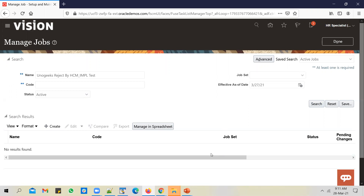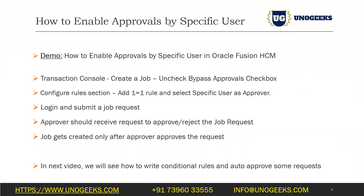So this is how you enable approvals. In the approval rules, you can add a default condition like 1 = 1 and configure a specific user as the approver. We ran two test cases: we approved one job request and rejected another. Only the approved job request was created in the application. In the next video we'll see how to write conditional rules, and I'll also show you how to use the auto-approve condition.